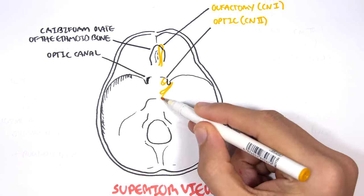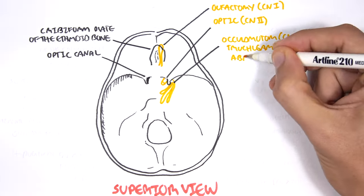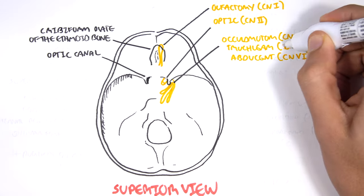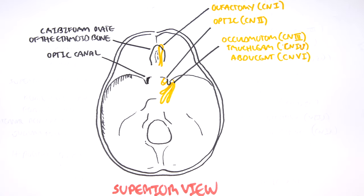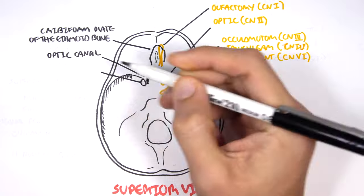Your oculomotor nerve, the trochlear nerve and your abducens nerve, which are your cranial nerves number three, four and six. These nerves are the nerves responsible for the movement of the eyeball. They exit through the same hole known as the superior orbital fissure.